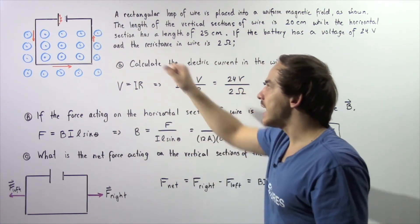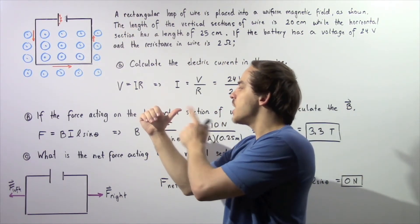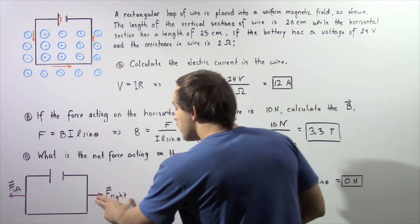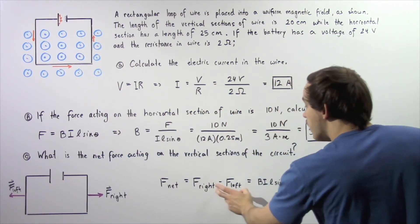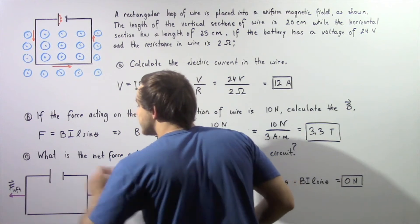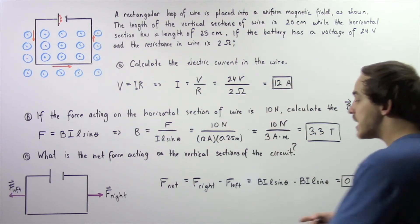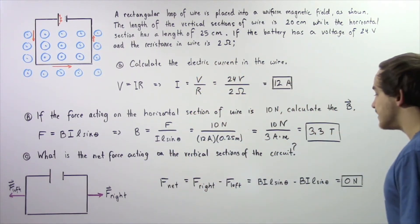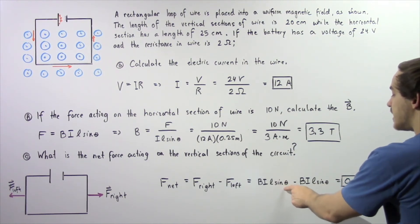Applying the right-hand rule to the other vertical section, the electric current points up and the magnetic field points outward. Extending the thumb, it points to the right along the x-axis. So one force points to the right and the other points to the left. The net force is simply the sum of these two forces. We choose the rightward force as positive, making the leftward force negative, so we have force-right minus force-left.